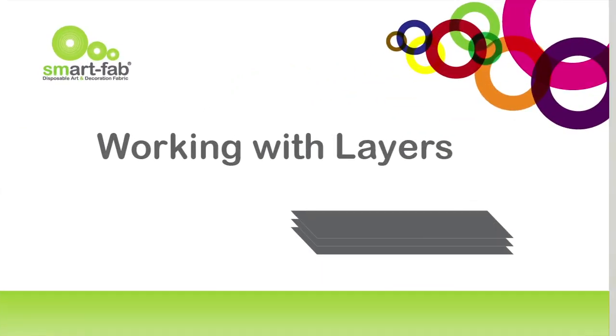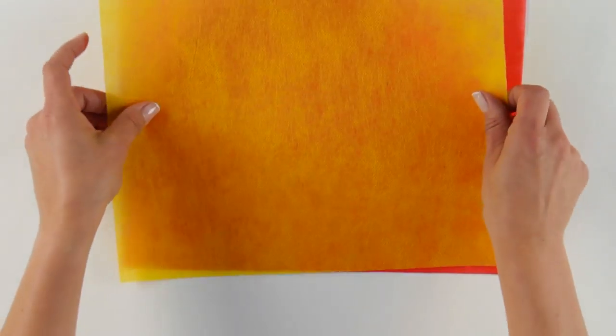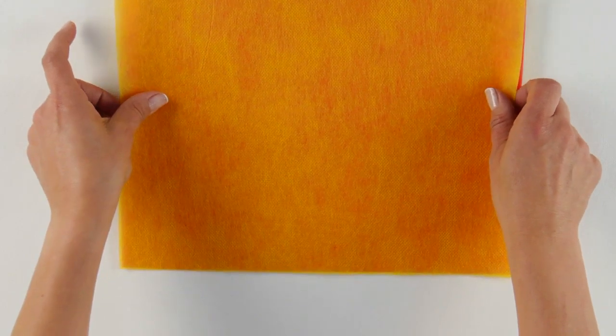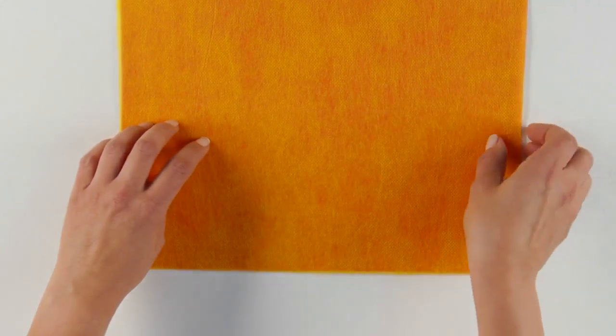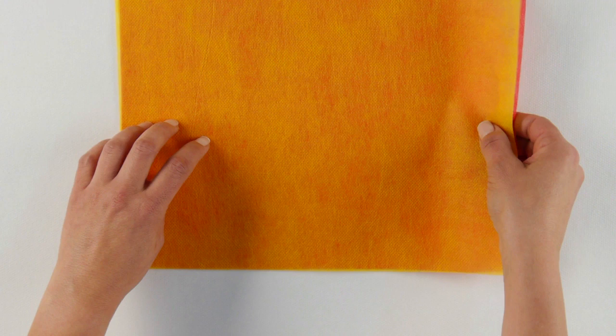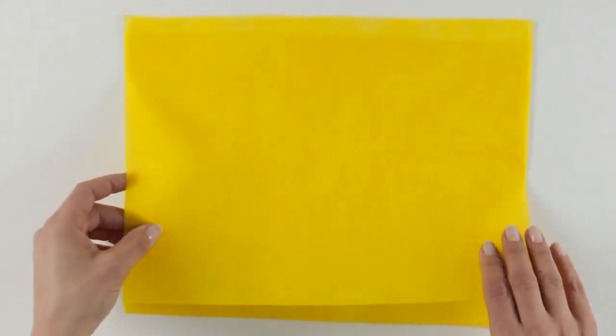Working with layers. Let's say you want to make orange. Just place a layer of yellow SmartFab over a layer of red, and you'll have orange. If you want to make a color more vivid, just use two layers of the same color SmartFab.